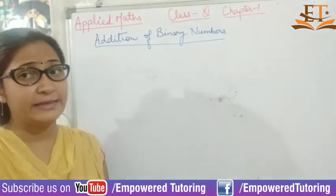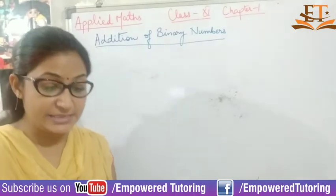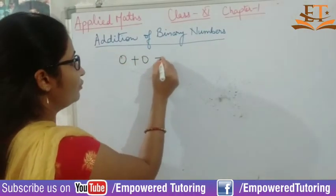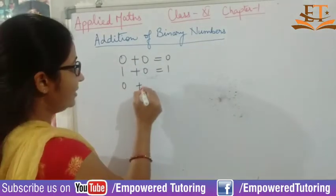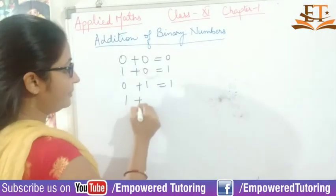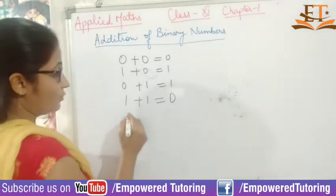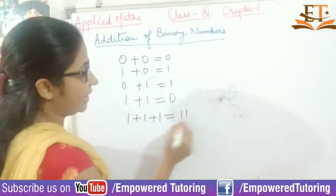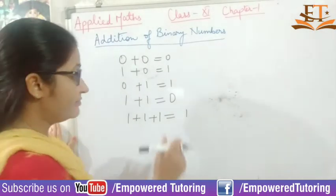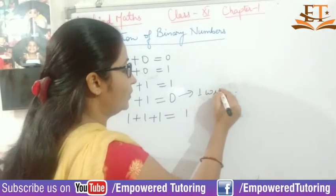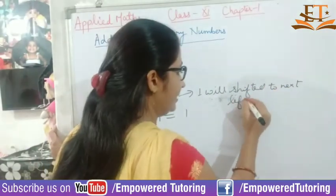Now let's see how we will add binary numbers. There are a few things you need to keep in mind: 0 plus 0 gives you 0; 1 plus 0 gives you 1; 0 plus 1 gives you 1; 1 plus 1 gives you 0 and a 1 is carried. When you add 1 plus 1, you write 0 here and 1 will be shifted to the next left digit.